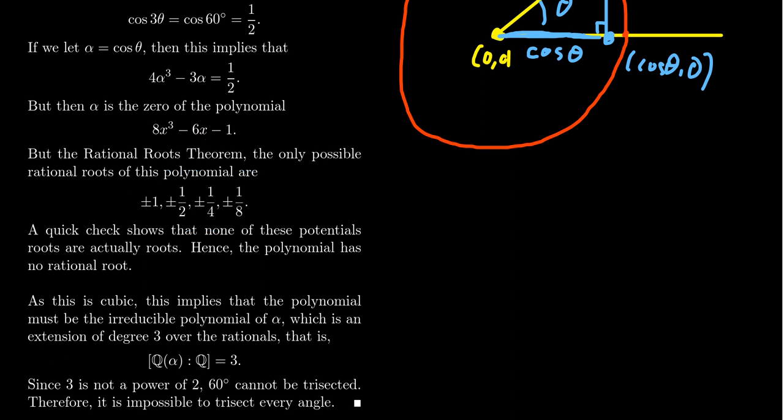Therefore, this polynomial is in fact irreducible because it has no rational roots. Therefore, this polynomial must then be the minimal polynomial for the cosine of 20 degrees.